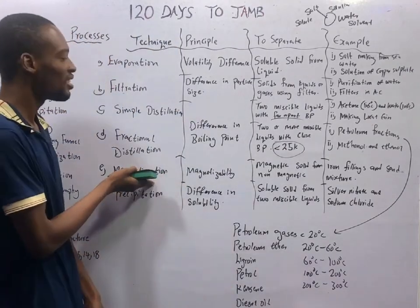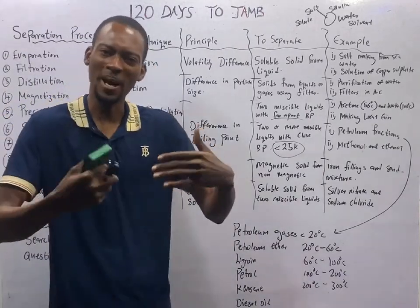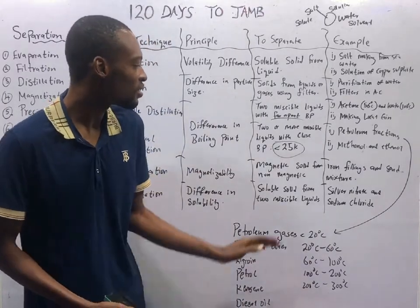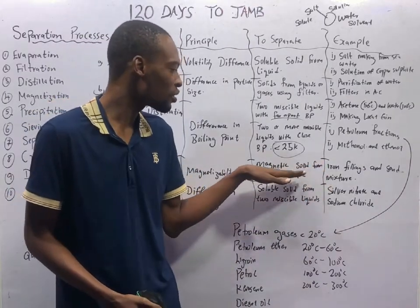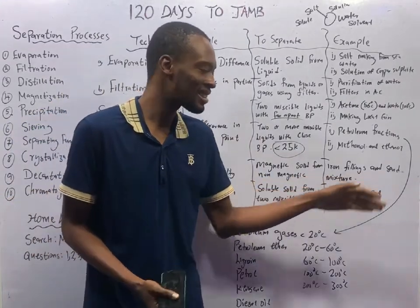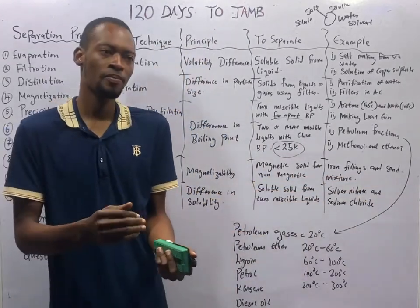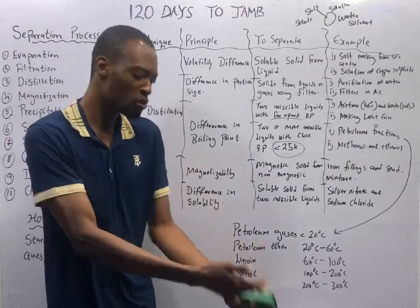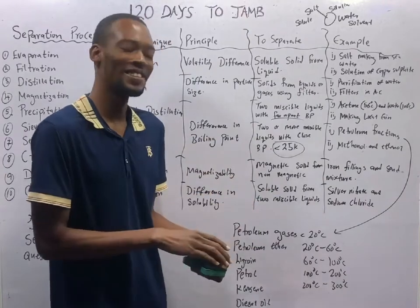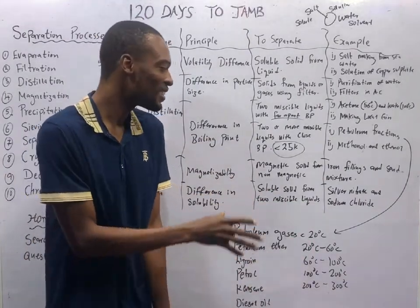Magnetization is a separation technique that operates on the principle of magnetizability. It is used to separate magnetic solids from non-magnetic solids. For example, in an iron filings and sand mixture, when you bring a magnet close, the iron filings jump onto the magnet while the sand is not attracted.